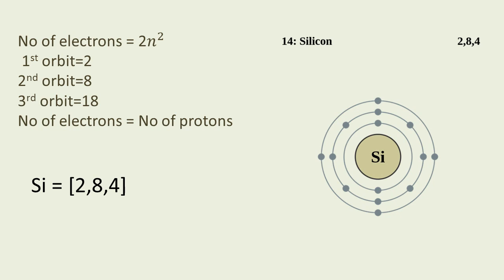The electrons in the last orbit are treated as valence electrons. These valence electrons are quite essential in order to generate or flow current, and therefore they are quite easily detached. Next we will discuss how current flows through a circuit.